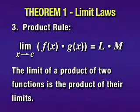Now let's take a special case of this. For instance, suppose g(x) is the constant little k. Well in that case, the limit as x approaches c of g(x) will be little k. That is, capital M here would be little k. And this rule would say the limit as x approaches c of f(x) times k equals L times k.